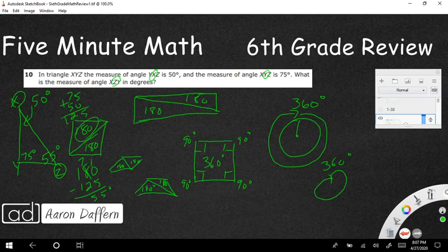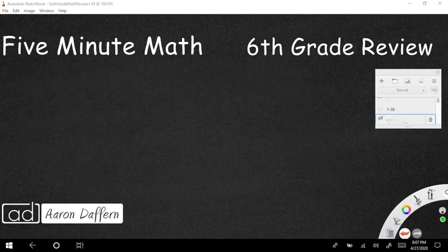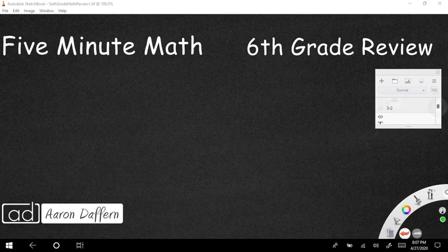This was a free response. So you'd have to bubble in 55 into the griddable response if this was on a star test. And finally, let's take a look at our last one for this evening.